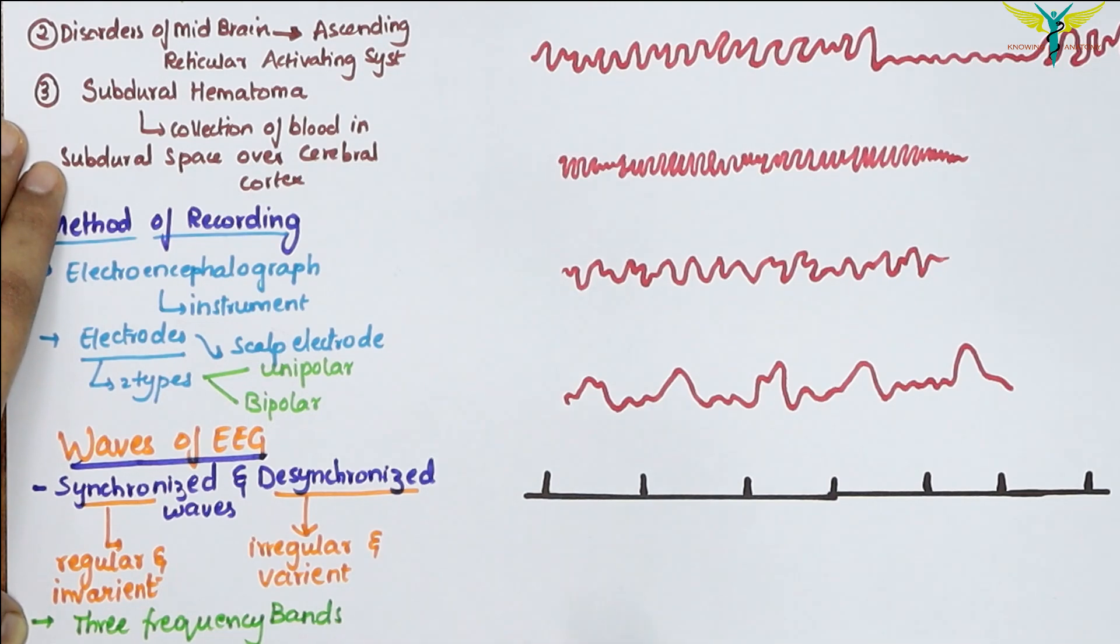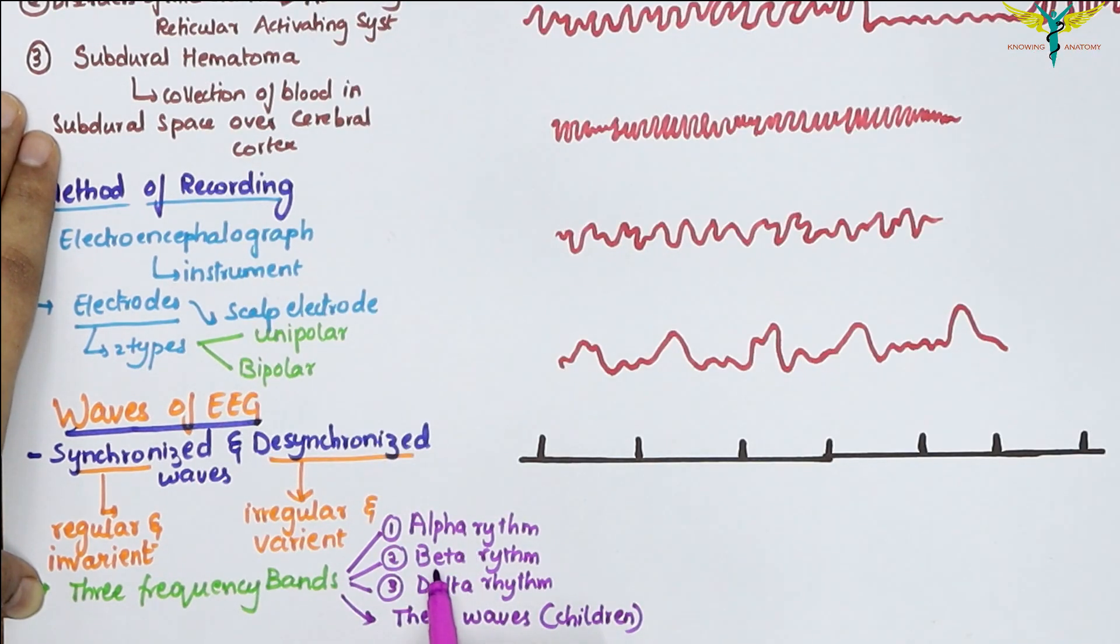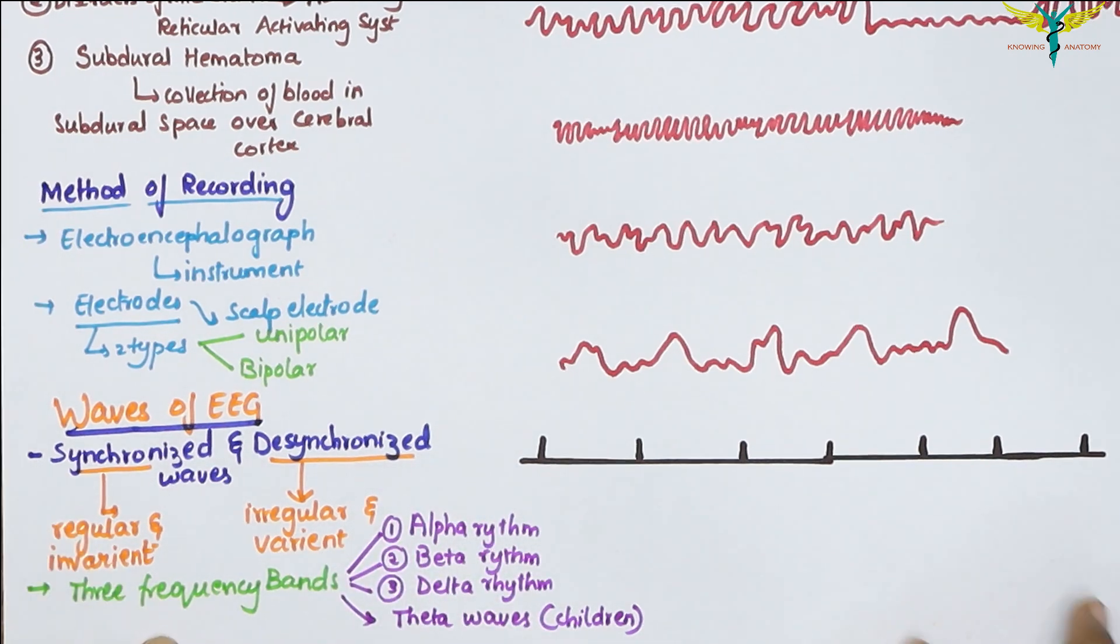In normal persons, the EEG has three frequency bands: the alpha rhythm, beta rhythm, and delta rhythm. In addition to these three types of waves, the EEG in children shows the theta waves.